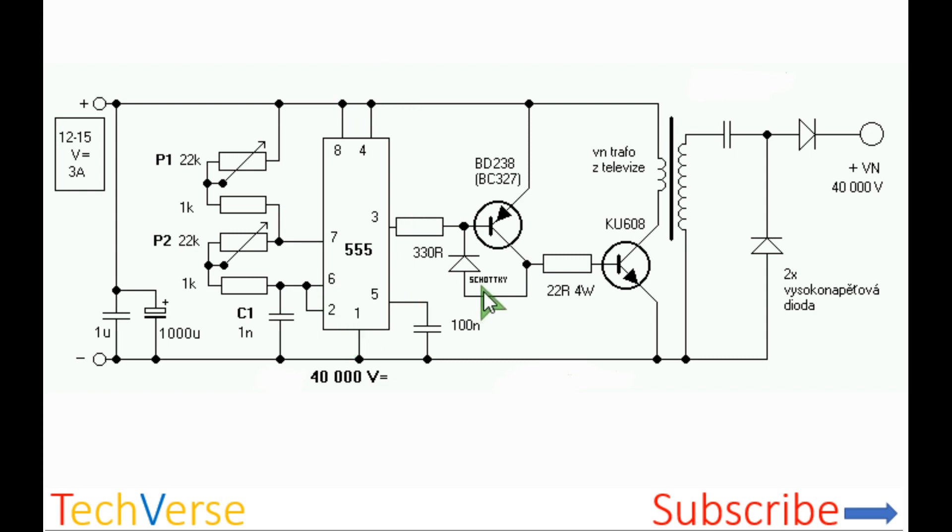The output transistor is driven by this PNP driver. When pin 3 goes low, the BD238 will conduct and current will flow through the transistor and through the main switching transistor.